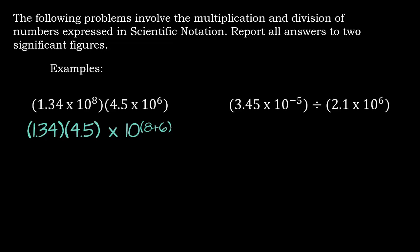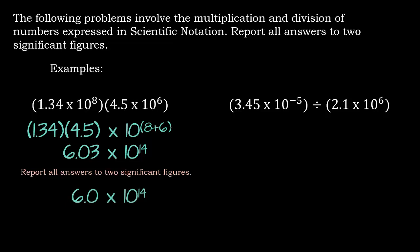So what I like to do is I take 1.34 times 4.5. I take the actual numbers and then I multiply by 10 to the 8th times 10 to the 6th. But remember when we multiply, we add the exponents. So that's why I have 8 plus 6. So 1.34 times 4.5 is 6.03 times 10 to the 14th. But remember, the question is asking us to report all answers to two significant figures. So I have to round. And it turns out our answer is 6.0 times 10 to the 14th.